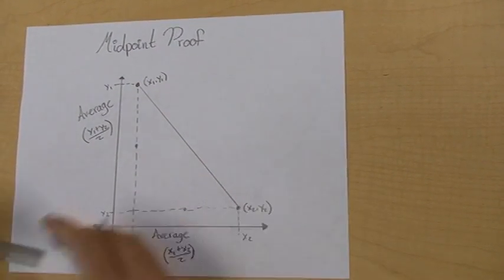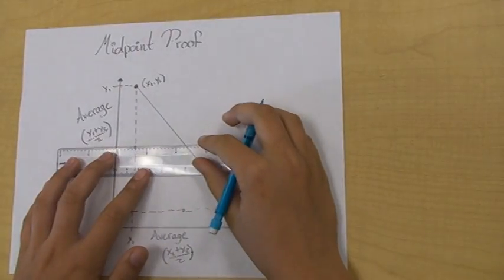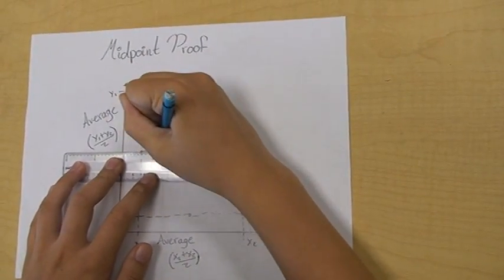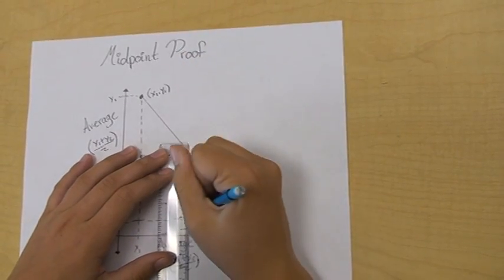The average of the x's and the average of the y's correspond to the average between the two points, or otherwise known as the midpoint.